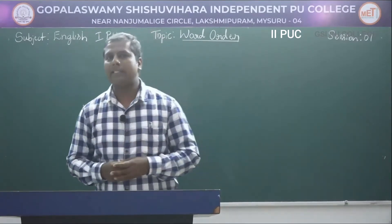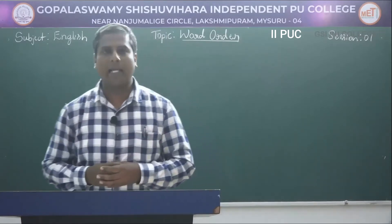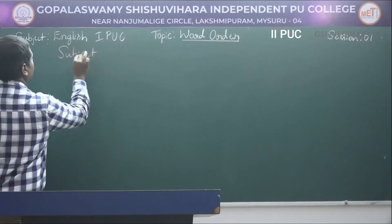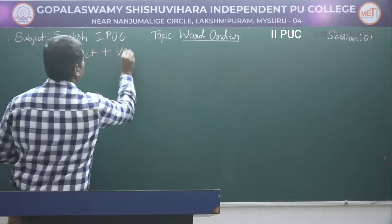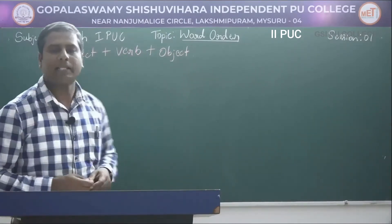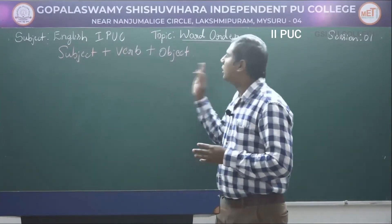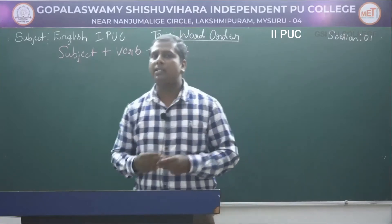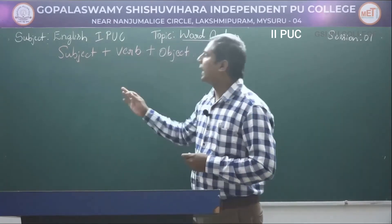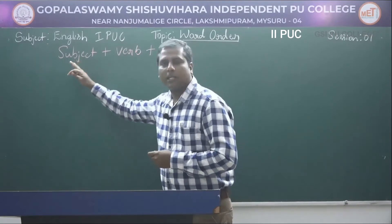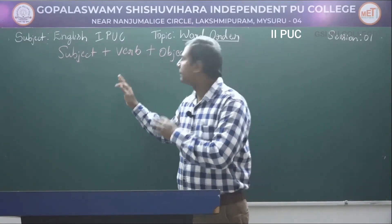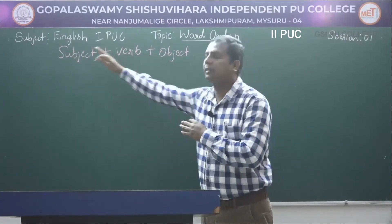The basic sentence structure in English is subject plus verb plus object, and most sentences in English follow this pattern. The subject represents what is talked or written about. The verb denotes action or a state of being, and the object is the one which receives the action done by the subject.